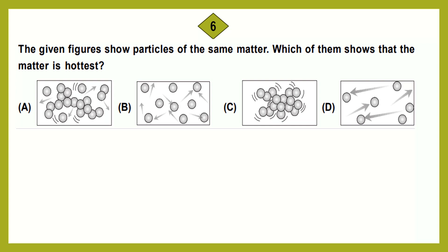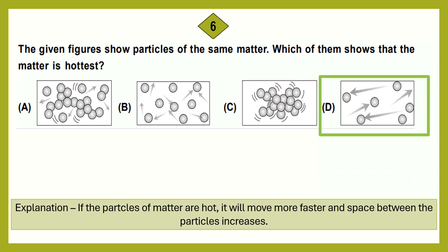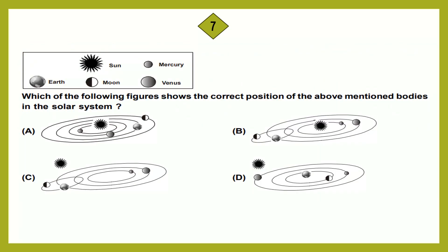Question number 6: The given figure shows particles of the same matter. Which of them shows that the matter is hottest? The correct answer is option D. If the particles of matter are hot, they will move faster and the space between the particles increases. The space between the particles is more in option D, therefore option D is the right answer.